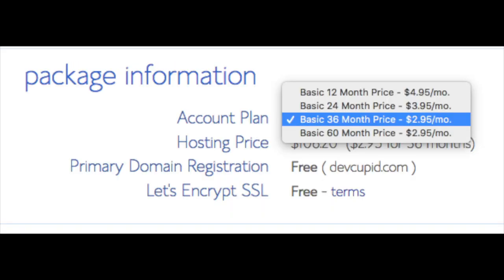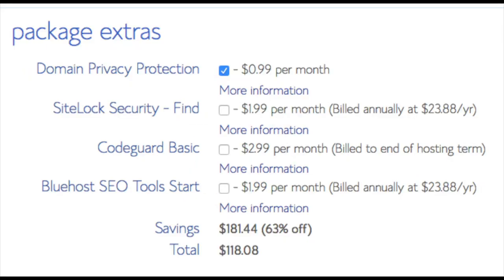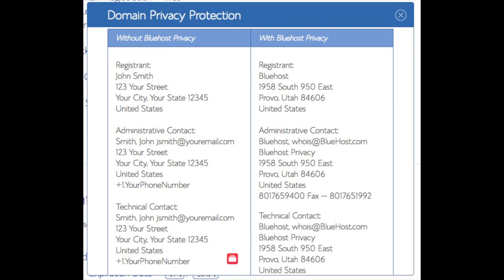Below that you will see Package Information and Account Plan, where you can select a term for your hosting package: 12 months, 24 months, 36 months, or 60 months. You'll save more money the longer you purchase hosting for — I'm going to select the 12-month package. Setup fee is free, domain registration is free, and Let's Encrypt SSL is free. This SSL certificate makes your site secure with HTTPS. Domain privacy is an add-on I highly recommend — it prevents telemarketers from getting your personal contact info and will show Bluehost's information for the site instead of yours.